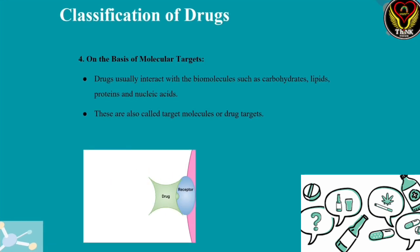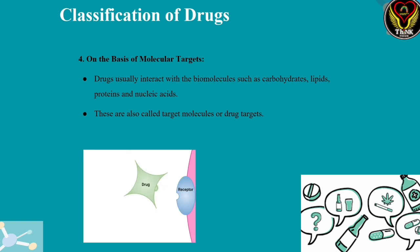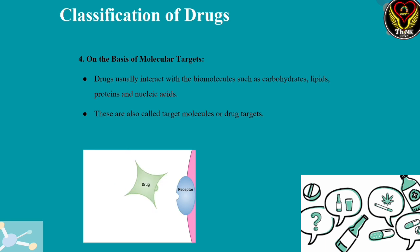The classification of drugs based on molecular targets: if we look at molecular targets, the drug attaches to its target. Drugs usually interact with biomolecules such as carbohydrates, lipids, proteins, and nucleic acids. These are called target molecules or drug targets. For genetic diseases, we design a gene as the target. Drugs are classified based on which target they act on.